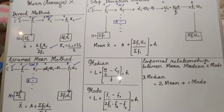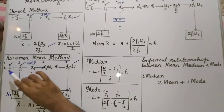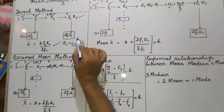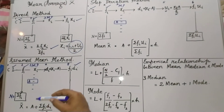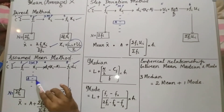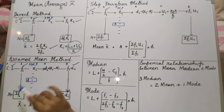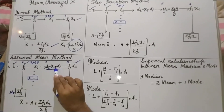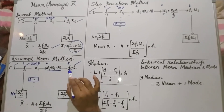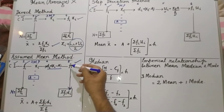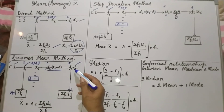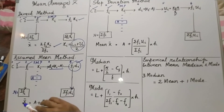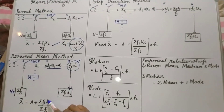In the assumed mean method, you will have five columns. The first two are given. The third is the midpoint, found using lower limit plus upper limit divided by 2. From among the midpoints, choose one score to be the assumed mean. Find the deviation using xi minus A, then find the product of frequency and deviation. Add the fifth column to get sigma fi di. Mean is calculated by A plus sigma fi di divided by sigma fi.